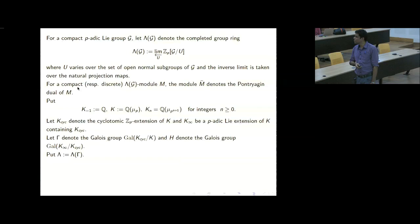These rings are also called Iwasawa algebras over G. When G is commutative, the completed group ring is commutative. For example, when G is Z_P, it will be a power series ring in one variable. If G is Z_P^n, it will be a power series ring in N variables over Z_P. Furthermore, when G is pro-P without P-torsion, this is actually what is called a regular local ring, even in the non-commutative situation, which can be defined in terms of homological algebra.